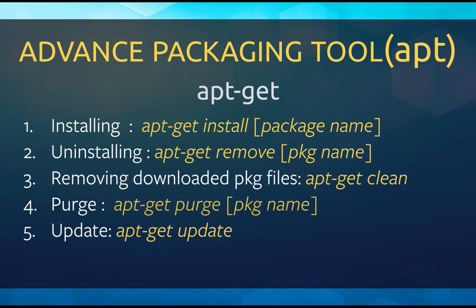apt stands for Advanced Packaging Tool. You can install a program using the apt package manager by typing apt-get install and then the package name. For uninstalling, you can do apt-get remove and then give the package name. For removing downloaded package files, you can do apt-get clean.